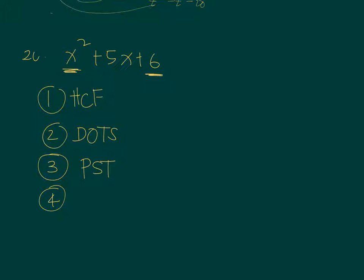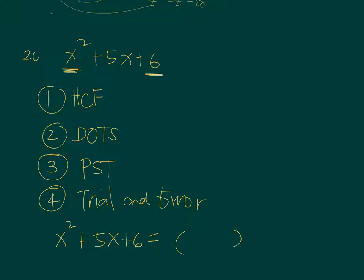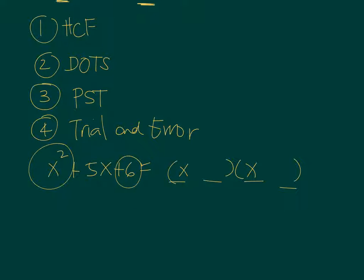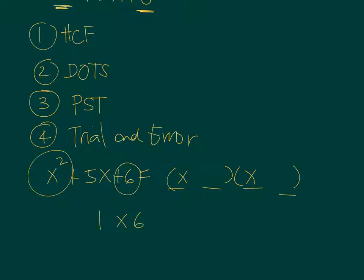So we do it by trial and error, looking at the combinations that will give us x squared plus 5x plus 6. A trinomial like this will result in two binomial factors, where the first terms come from x squared and the last terms come from 6. x squared is x times x. For 6, the factor pairs are 1 times 6 and 2 times 3.